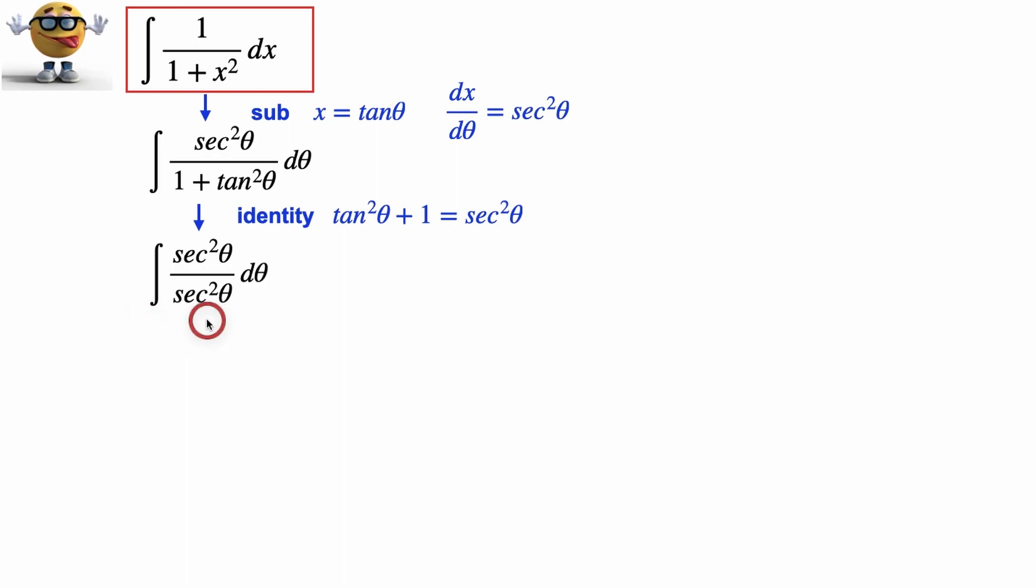And if we do that, check this out: secant squared theta divided by secant squared theta, that's fun, that cancels, so we literally have to integrate d theta, which is like the world's easiest integral, and it's literally theta plus our integration constant.